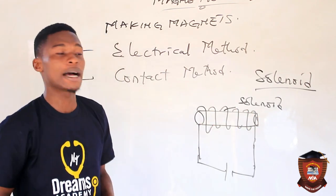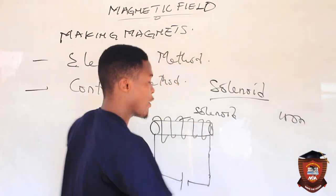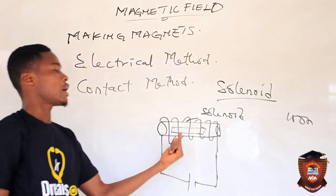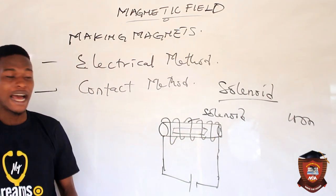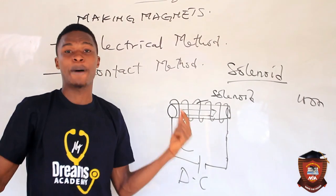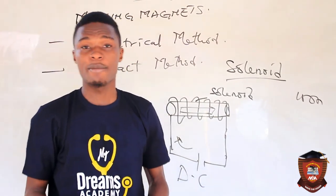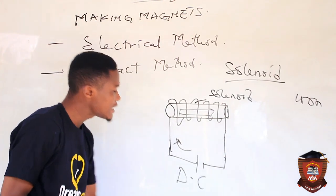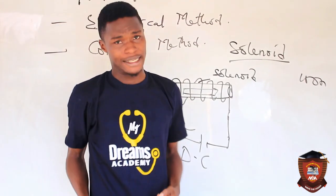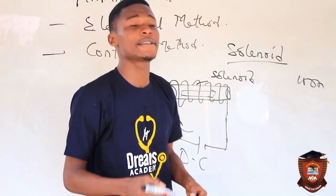Then we bring our specimen — for example, iron — and slot it into the solenoid. Once the DC current is passed — and note that we use DC, not AC, meaning direct current — after some time it is observed that the specimen becomes a magnet.